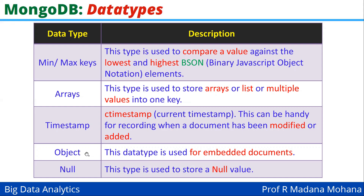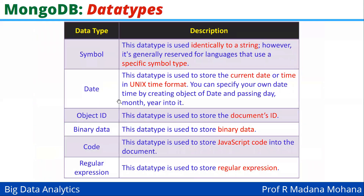The next type is object. This data type is used for embedded documents. The next data type is null. This type is used to store a null value. The next data type is symbol. This data type is used identically to a string; however, it is generally reserved for languages that use a specific symbol type.